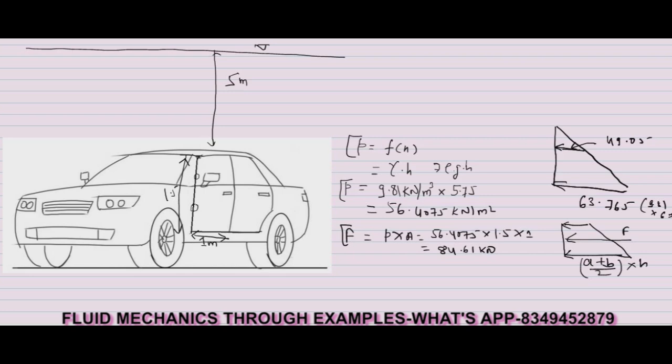The hydrostatic pressure force is calculated by this formula: Pc multiplied by A, that is gamma times Hc times A. I have calculated Pc as gamma 9.81 into Hc, the centroid of this segment, and area is 1.5 by 1 meter. So the final hydrostatic pressure force developed at the centroid point is 84.61 kilonewton.